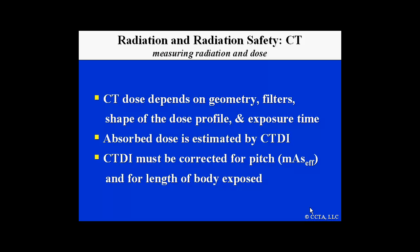CT dose depends on the geometry of the scanner, the filters applied — especially the use of a bow tie filter — the shape of the dose profile, and the exposure time. The absorbed dose is estimated by the CTDI apparatus. However, the CTDI must be corrected for pitch of an actual study and for the length of the body examined.